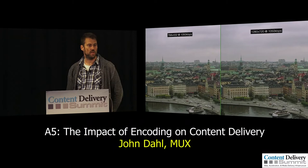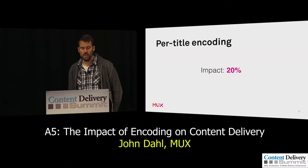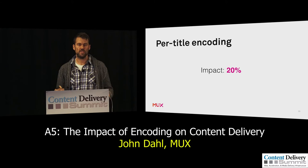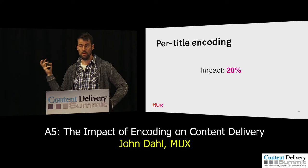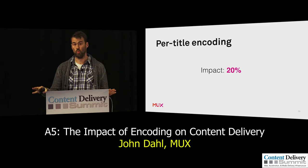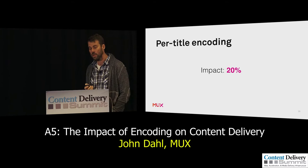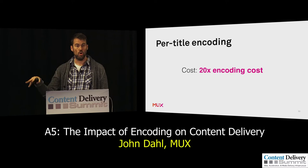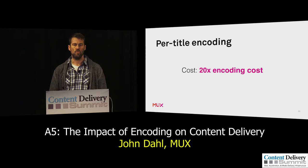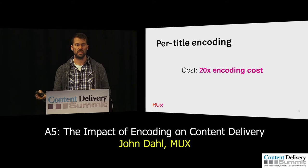What's the impact of per-title encoding? If you have to put a single number on it, I'd say about 20% in terms of quality or bitrate savings. It varies by content type — some content types really love this, some see a little less benefit. It's never worse than using a fixed ladder, though sometimes the fixed ladder randomly guesses right. The cost, unfortunately, is about 20x the encode cost, because if you do the Netflix brute-force approach you're going to do 10 to 20 times as many encodes as you actually deliver — maybe 100 encodes to get the 7 you actually want to deliver. And VMAF is a pretty slow, computationally intensive metric.